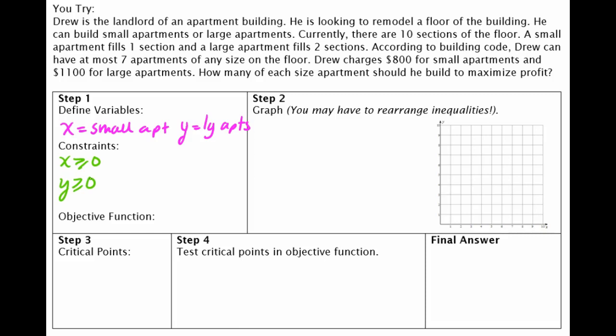And then I have two other constraints, and I'm going to highlight the sentences where these happen. So it's actually two sentences for my first one. So I'm going to highlight these two. So I'm going to actually read the second sentence first. It says, a small apartment fills one section, and a large apartment fills two sections. And then that first sentence says that there are ten sections available of the floor. So ten is kind of like my total.